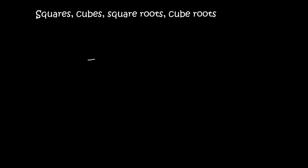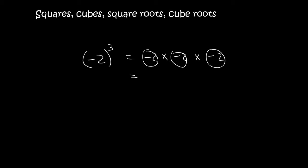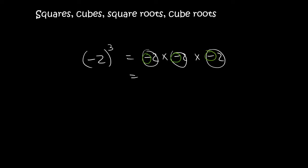Now if I have minus 2 to the power of 3, it means minus 2 times minus 2 times minus 2. We know that 2 times 2 is 4, times 2 is 8. We then count the negatives: 1, 2, 3. That will be a negative because it's an odd number of negatives, so it's negative 8.